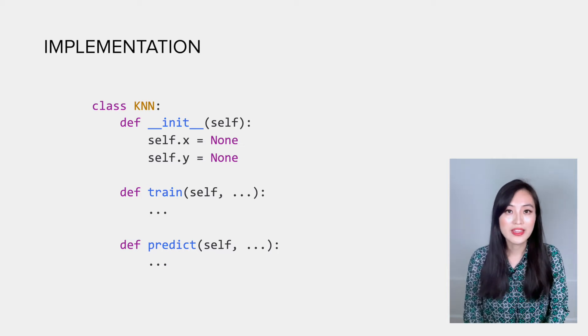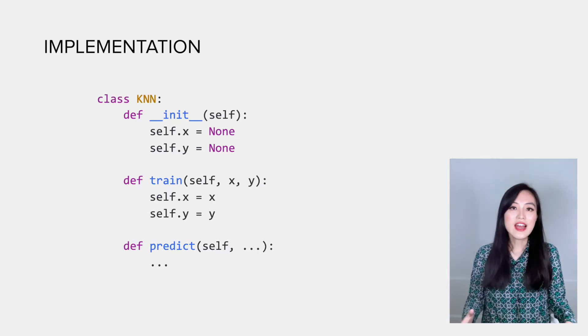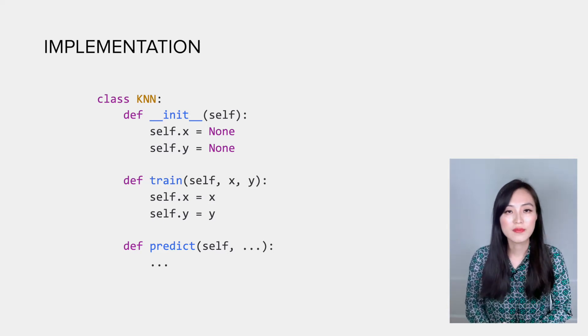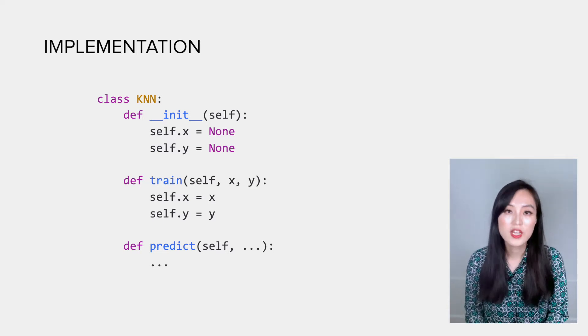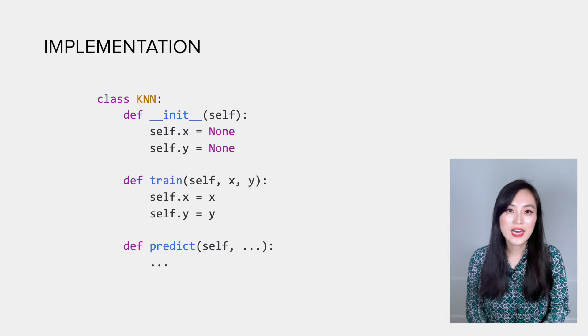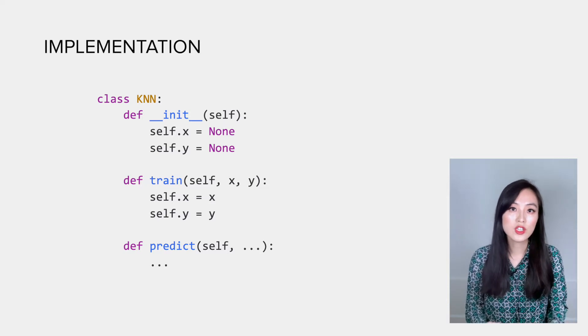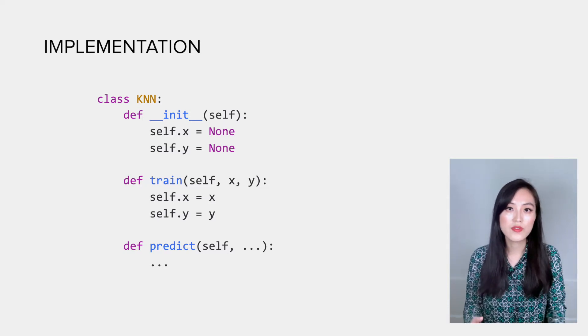Next, let's look at the train function. It's pretty straightforward—we just store the training data x and y into self.x and self.y so that can be used by the predict function.